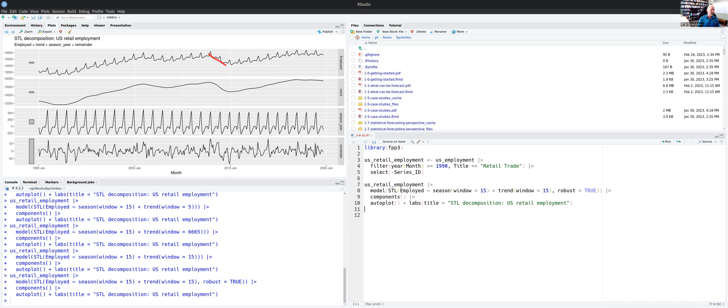So that's becoming more extreme values in the remainder. And so when you down weight them, it does an even worse job actually in that particular period. So robust is not always desirable. Sometimes you want it and sometimes you don't. The default is false.